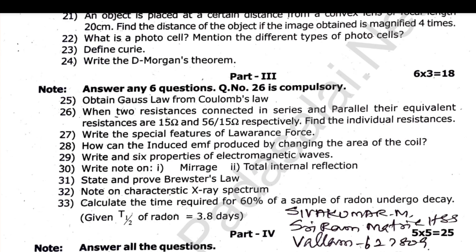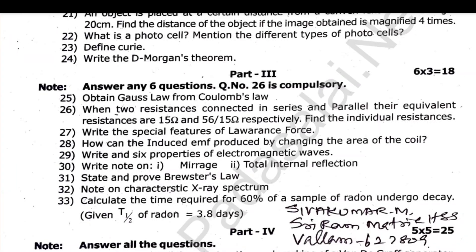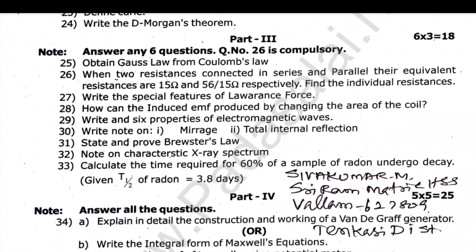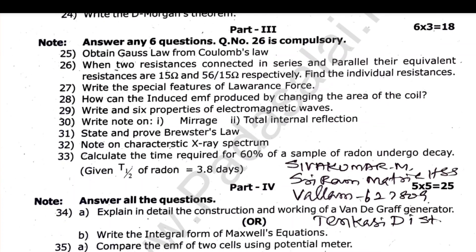Next, Part 4, 5 marks section. If you look at this, you will see any choice. Explain in detail construction and working of Van de Graaff generator, or integral formula of Maxwell's equations, EMF of 2 cells using potential meter, or De Broglie hypothesis and derive an expression of De Broglie wavelength of electrons.